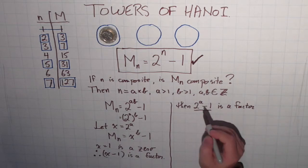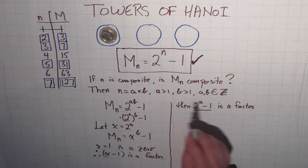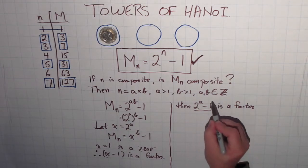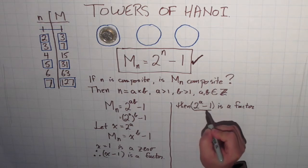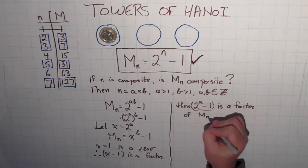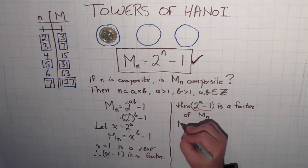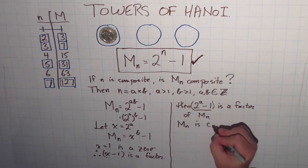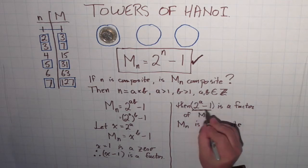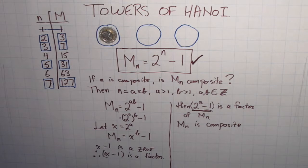Wait a second. If x - 1 is a factor, and x was 2^A, well then 2^A - 1 is a factor. Let's look at this expression more closely. A is a number, an integer greater than 1, so the smallest A could be is 2. And 2^2 is 4 - 1 is 3, which is also bigger than 1. In other words, I've just found something that divides into M_n—2^A - 1 is a factor of M_n. In other words, M_n is composite.